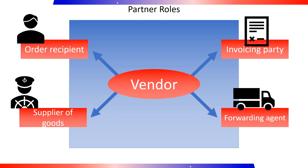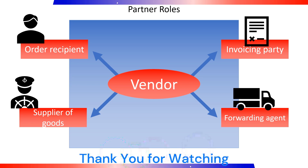The vendor can assume various roles within the business partners of your company. For example, during a procurement transaction, the vendor is first the order recipient, then the goods supplier, and finally the invoicing party. The maintenance of partner roles in the vendor master record allows you to distribute one or more of these roles to different vendors. For example, using the Partner Role function, you can define a different creditor as a freight forwarder for a certain vendor.